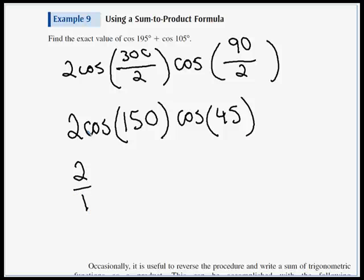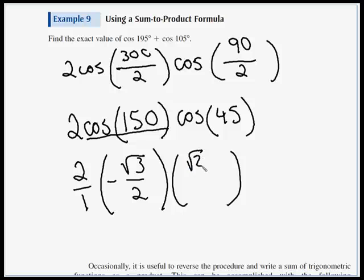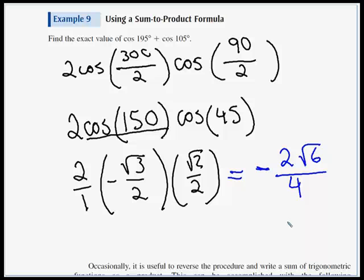We're going to have a 2, and let me put it over 1, because the cos of 150 is negative root 3 over 2. The cos of 45 is root 2 over 2. And then we multiply straight across. It's going to be negative for sure. 2 times root 3 times root 2. Root 2 times root 3 is root 6. 2 times the root of 6 over 1 times 2 times 2 is 4. And here we could reduce. That would become negative root 6 over 2.